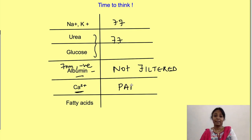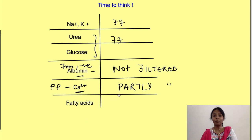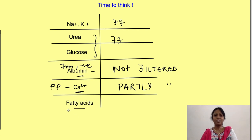Calcium, even though it is an electrolyte, is only partly filtered because part of it is bound to plasma proteins in the plasma, and any substance bound to plasma proteins is not filtered. Fatty acids, on the other hand, are almost completely bound to plasma proteins and are therefore not filtered at all.